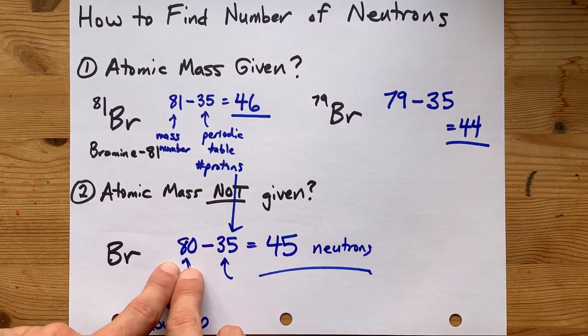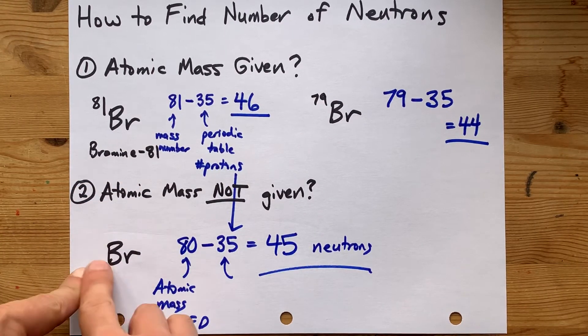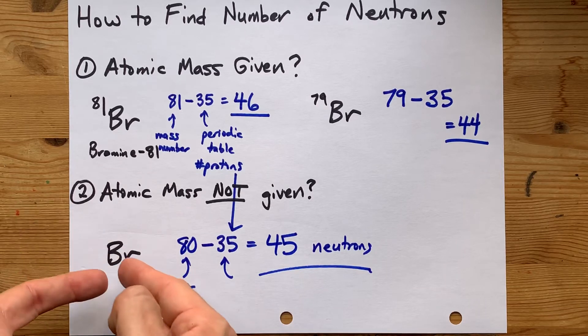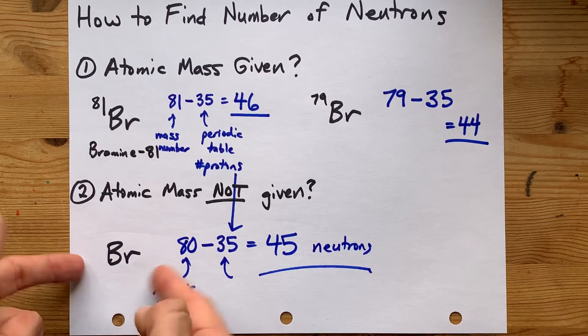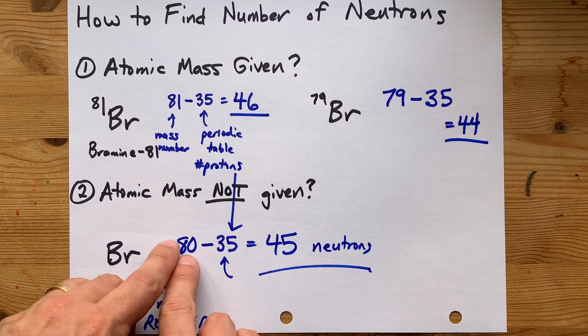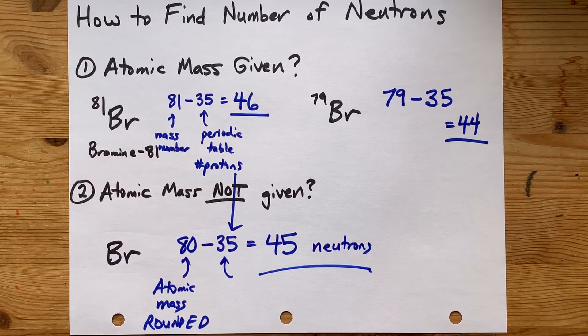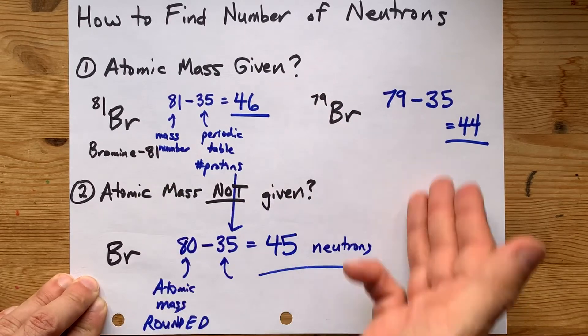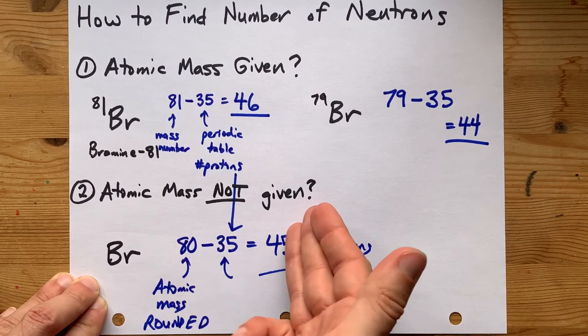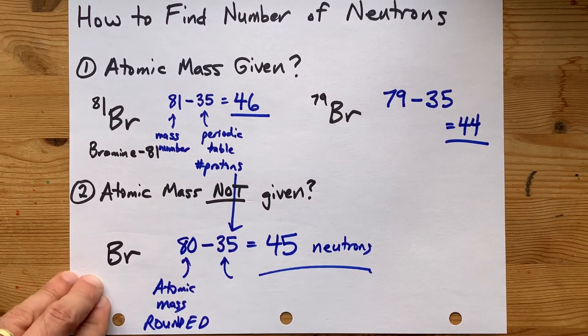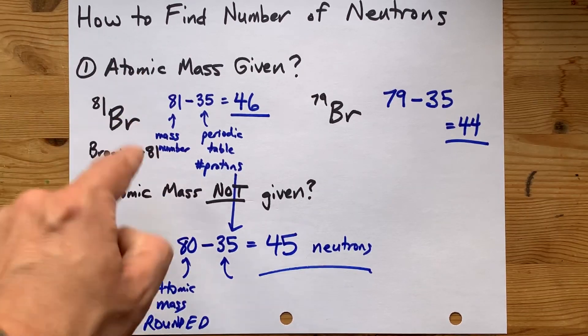If your teacher doesn't give you the mass number of the particle, see, it just says Br, no 81s, no 79s, no clues, round the mass from the periodic table to the nearest whole number, and then subtract the atomic number. It's the same process for either, but there's an assumption you have to make if you're not given the mass number of the exact atom your teacher cares about.